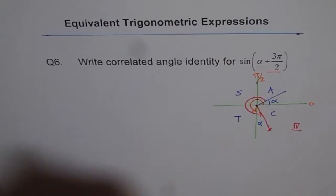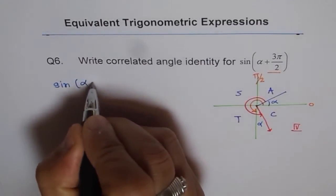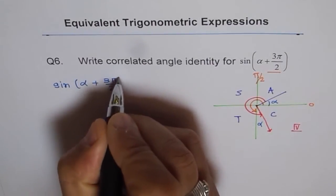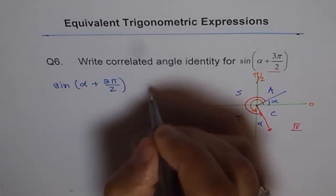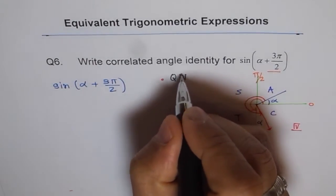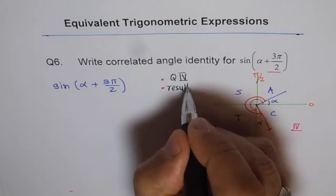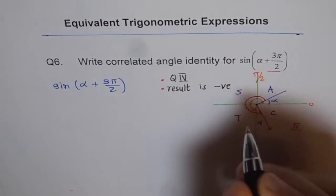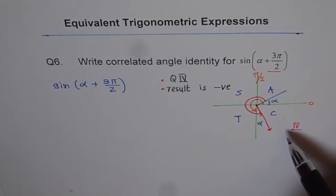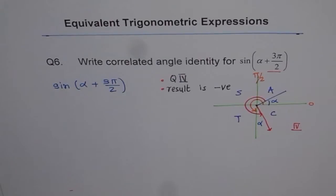So we can summarize our observation. When we are talking about sine of alpha plus 3 pi by 2, we notice: first, we are in quadrant 4. Second, the result is negative, because sine in quadrant 4 is negative. So whatever we write, we should get a negative result — that is the primary issue here.